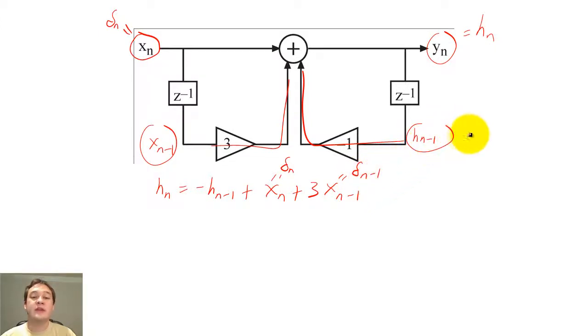We will assume that the delay register equaled 0 to start. Based on this formula, we find that h sub 0 equals 1.